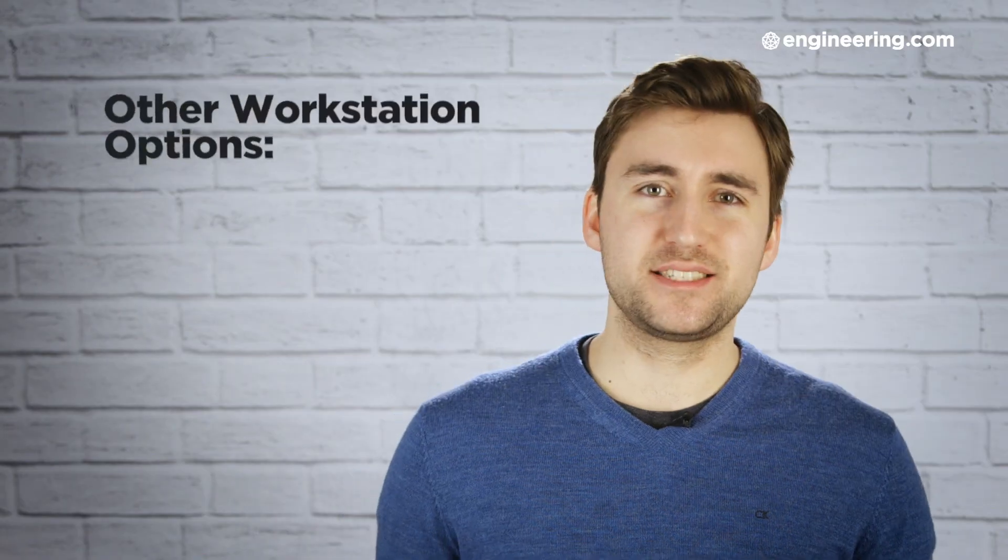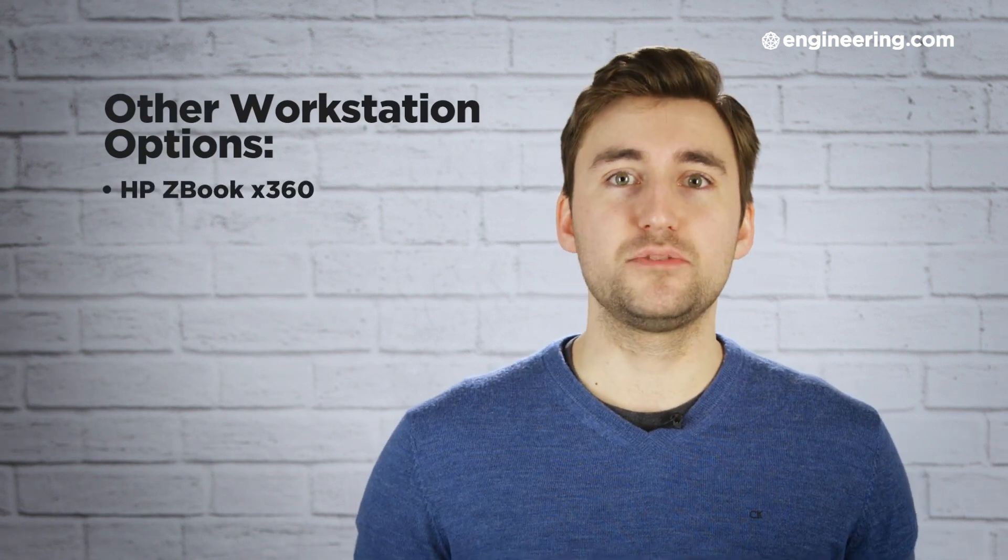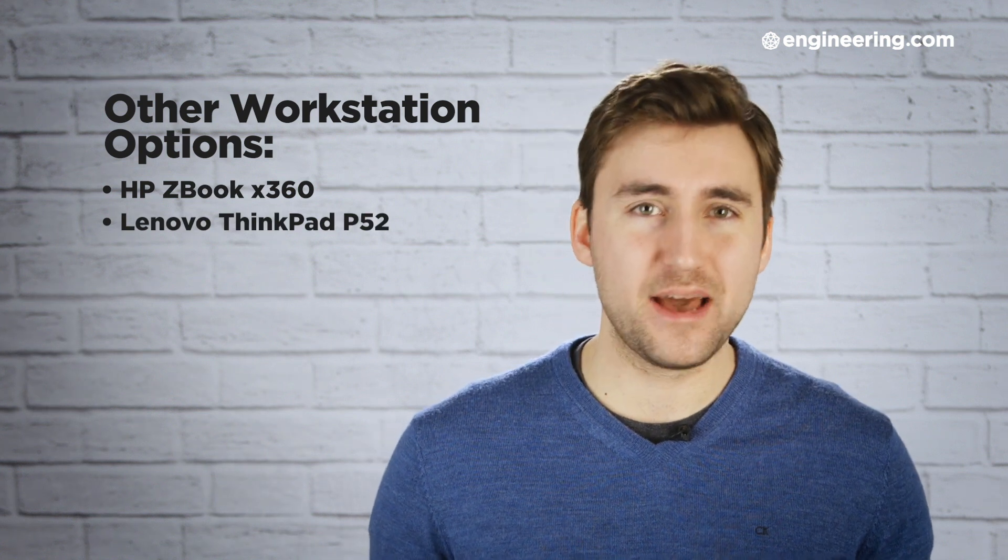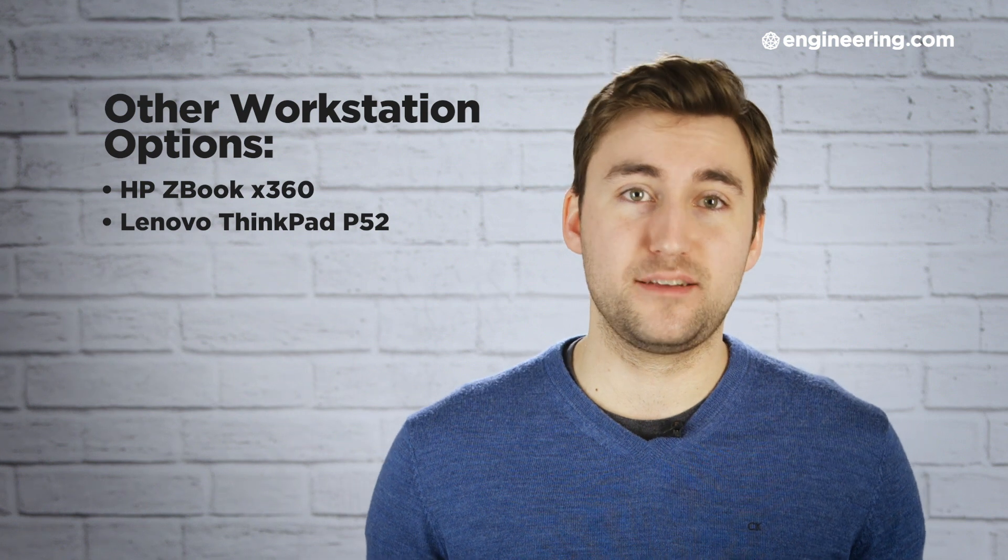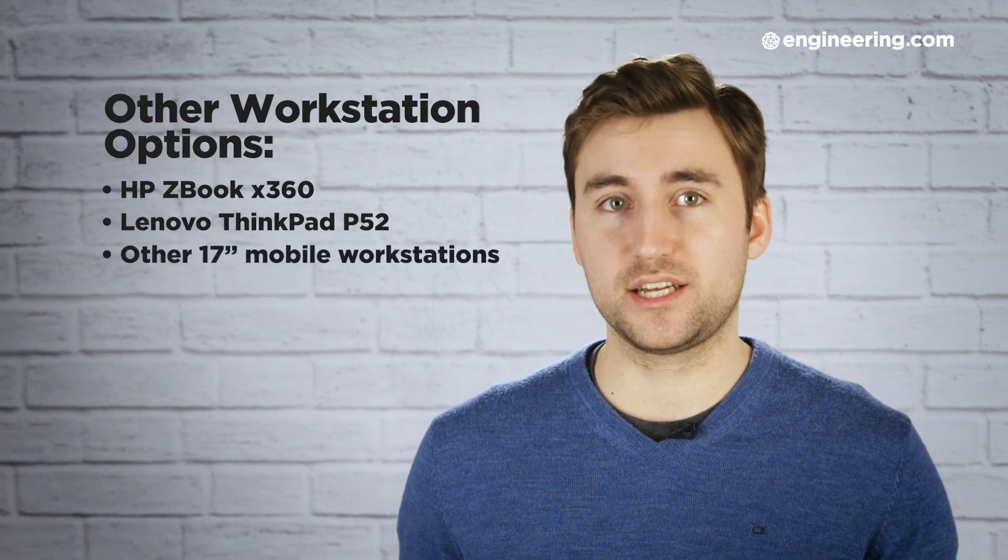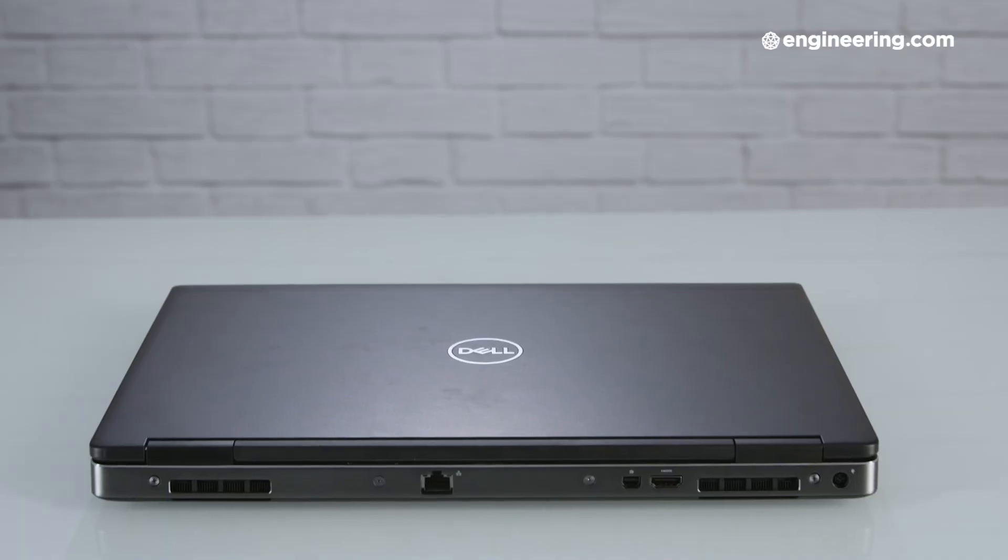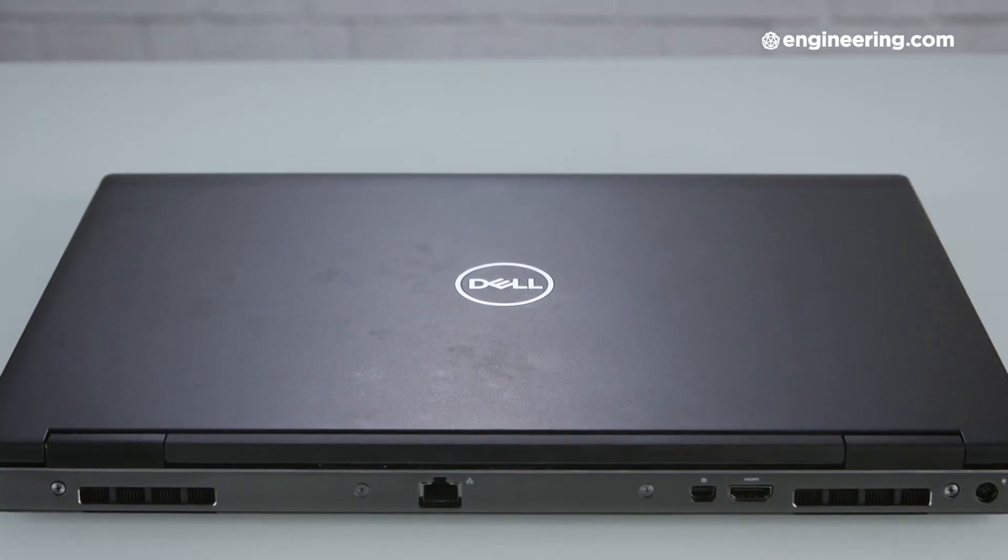The configuration options are great, but just to be clear, you can find them in other mobile workstations. You can get a Xeon E2186M in an HP ZBook Studio X360, you can get a Quadro P3200 and 128 gigabytes of memory in a ThinkPad P52, and you can even exceed the 7530's top specs in many 17-inch mobile workstations. But among 15-inch laptops, the Precision 7530 is unique in offering these high specs across the board: CPU, GPU, memory and storage. Specked out, this thing is pretty crazy.